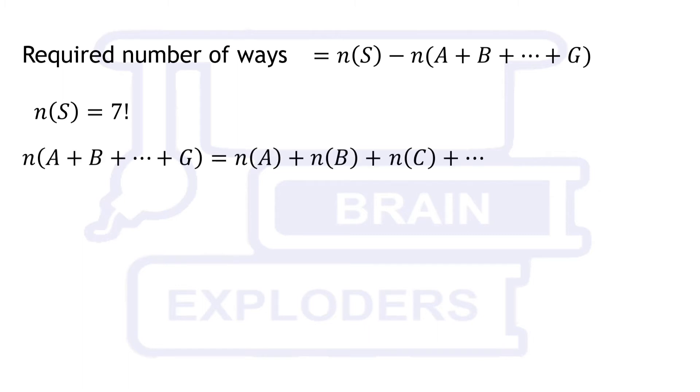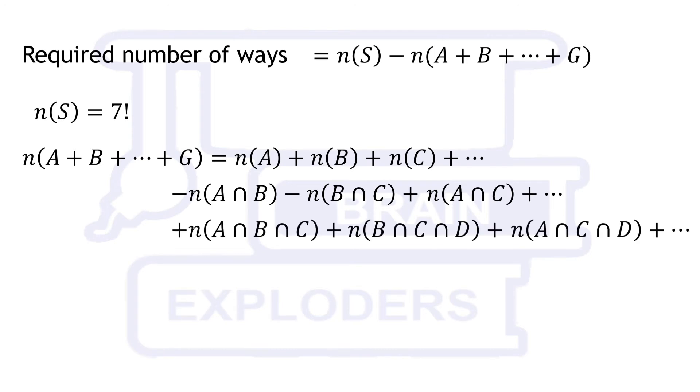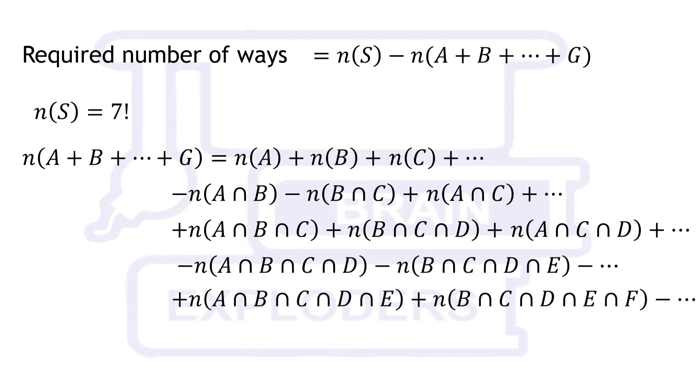With the help of set theory, we can write cardinality of sum of sets A to G equals to sum of cardinality of each set minus sum of cardinality of all pairs of intersections of two sets plus cardinality of all pairs of intersections of three sets and so on.